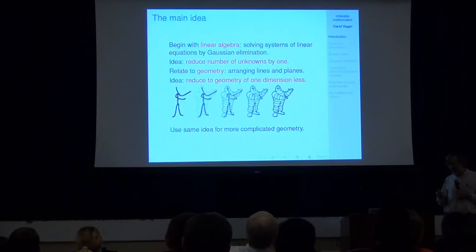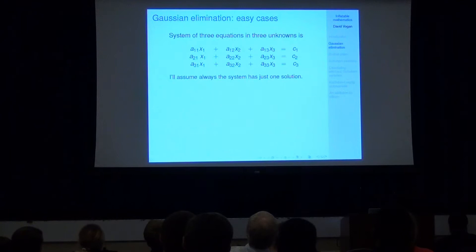So here's a system of three equations and three unknowns, and I'm always going to look at systems that have only one solution. So how do you go about solving this?